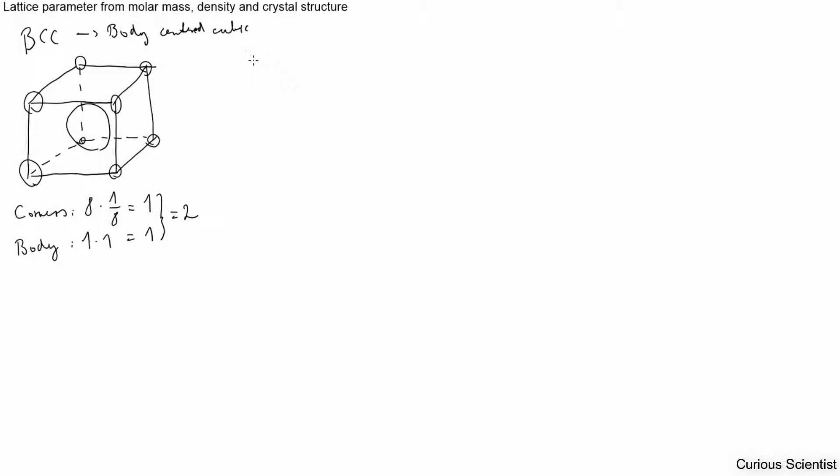Based on the previous lecture we calculated the Wigner-Seitz radius. Here we use our mass, which is the molar mass, and then we will use the density, which can be obtained from the periodic table of elements and the Avogadro number. If you don't remember, this should be 6.022 times 10 to the 23rd.